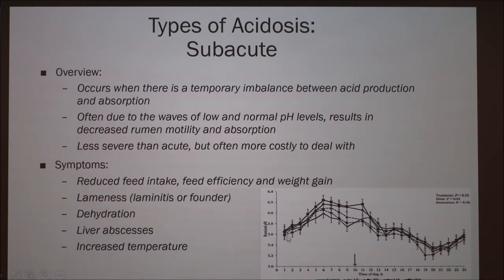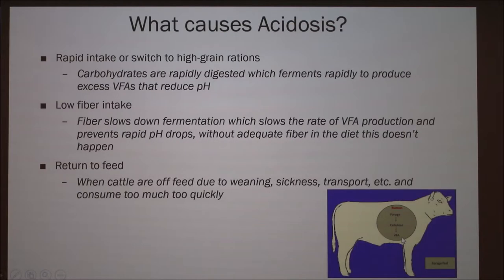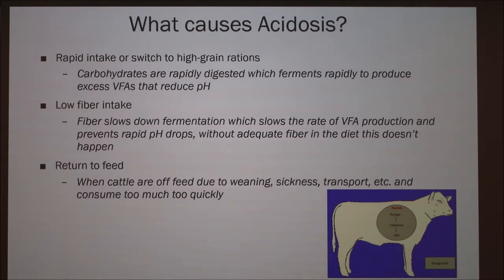This graph shows the waves of pH associated with subacute acidosis. So what causes acidosis? The first main factor is rapid intake or a switch to high grain rations. Carbohydrates are rapidly digested, which ferments them quickly to produce excess VFAs, reducing the pH. Cattle can also have low fiber intake — fiber slows down fermentation, which slows the rate of VFA production and prevents rapid pH drops.